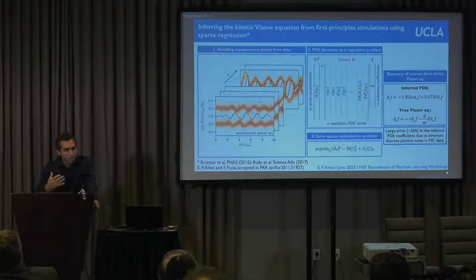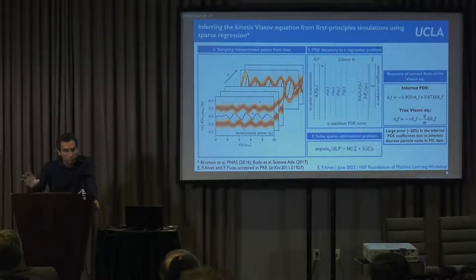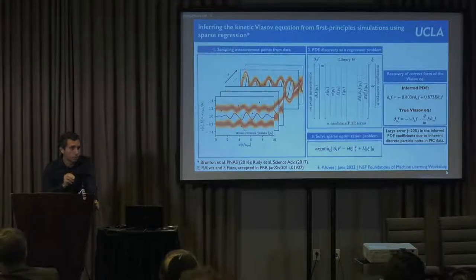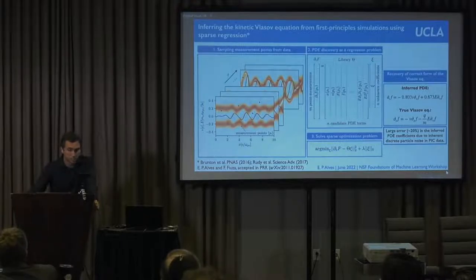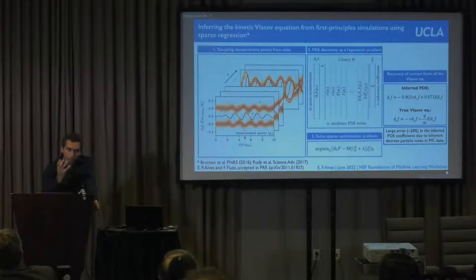I have been inspired by recent work using sparse optimization methods to discover governing equations from data. In particular, work that began at the University of Washington by Professor Nathan Kutz and Steven Brunton and others, which formulated finding simple, parsimonious governing equations from data as a sparse optimization problem. Here I'm showing an example in the context of plasma physics, where we see different snapshots of prototypical nonlinear plasma dynamics.